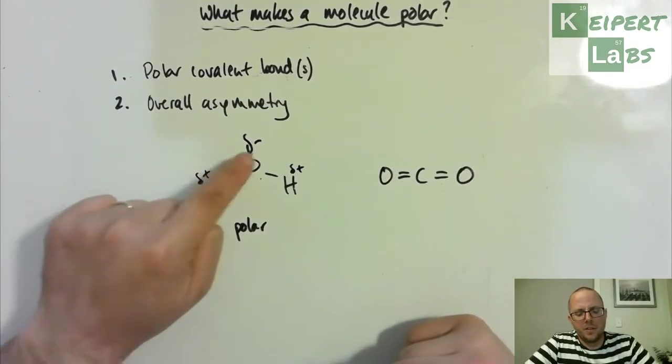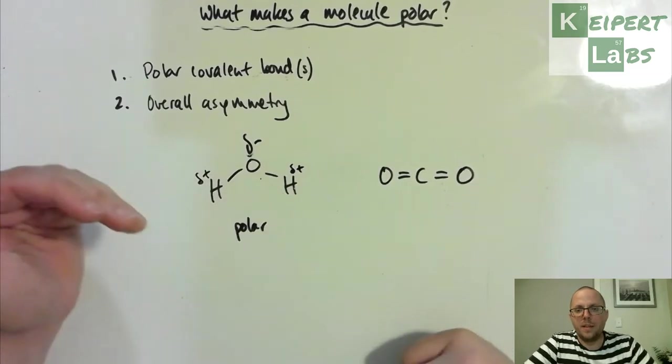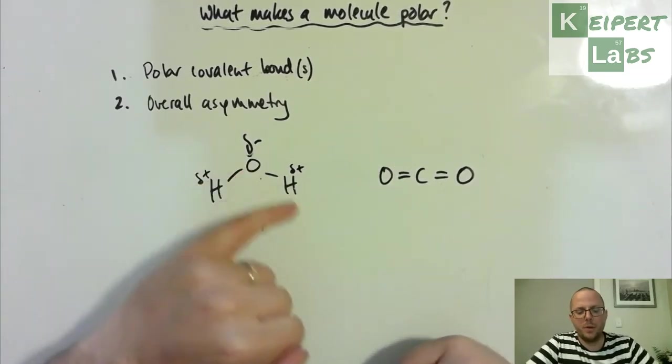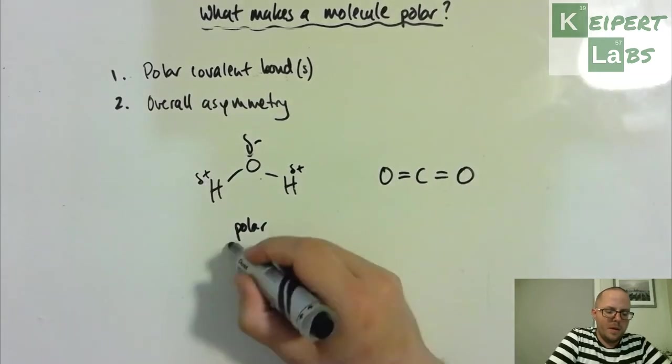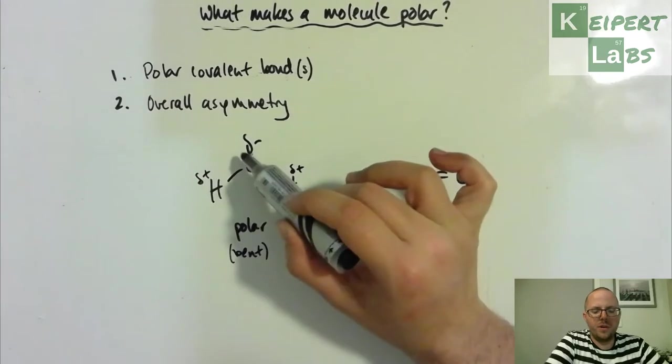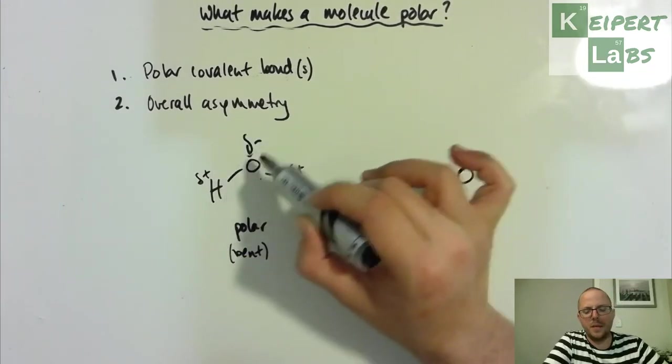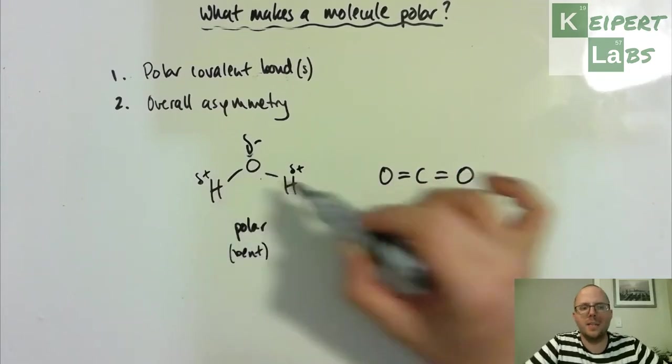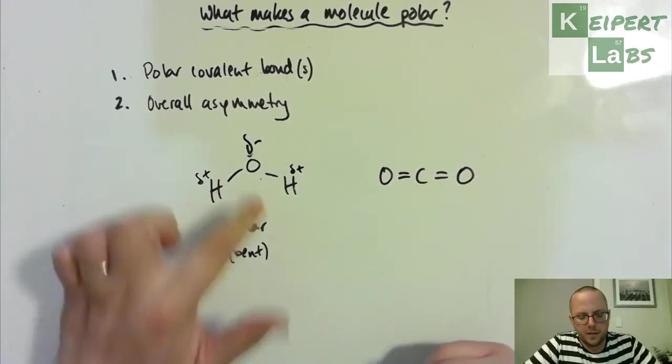The second thing is that if you look at this shape, from valence shell electron pair repulsion theory, we'll recognize that water is what we call a bent shape. We have two lone pairs of electrons that are taking up space off the oxygen here, and therefore these bonds extend down this way.